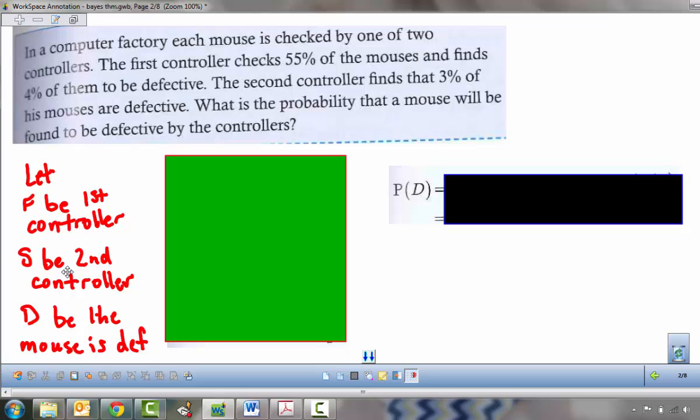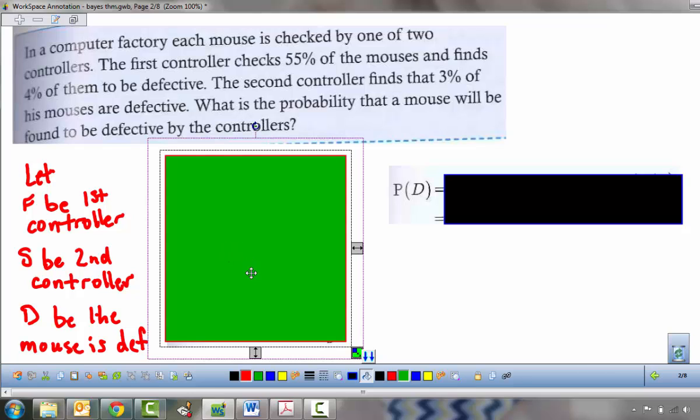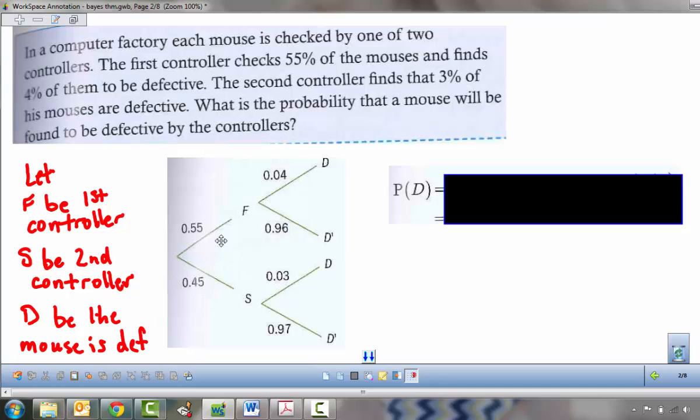Create a tree diagram right now for this problem. Let's see how well you understand a tree diagram. So pause the video and do that. Okay, so let's see if yours agrees with mine. We have the first controller, second controller, and then once we decide on first controller versus second, the mouse is either defective or not defective. Defective or not defective. We should have the branches labeled as such.